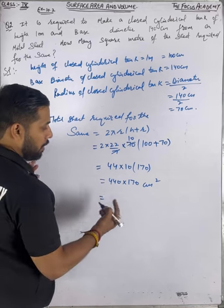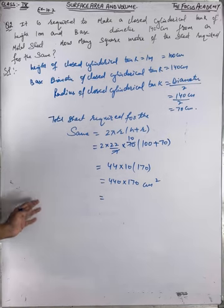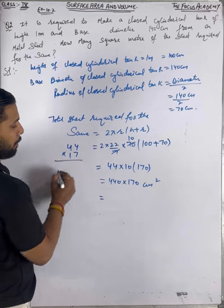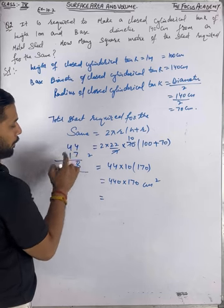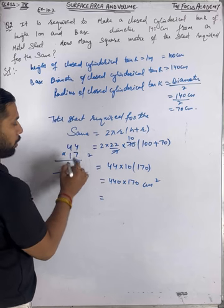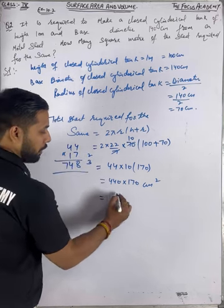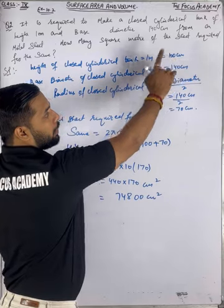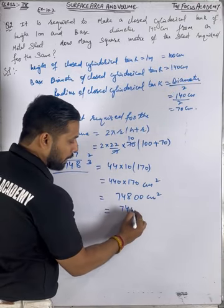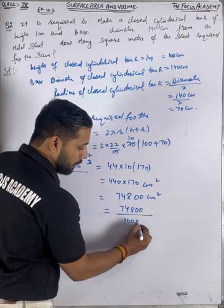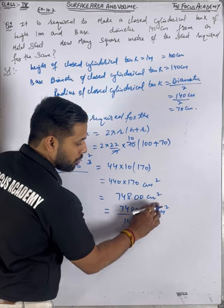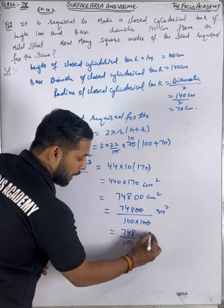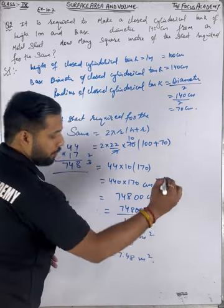If we want to write this in square meters: 44 × 170 = 7480 cm². Since 1 cm = 1/100 m, 1 cm² = 1/10000 m². So we divide by 10000 — the two zeros cancel, leaving 748 ÷ 100 = 7.48 m². Therefore the sheet required is 7.48 square meters.